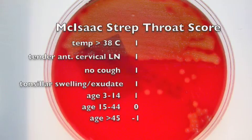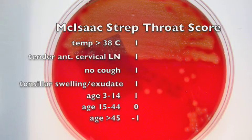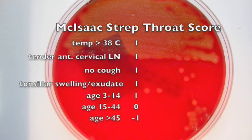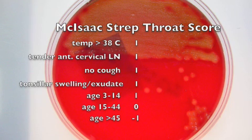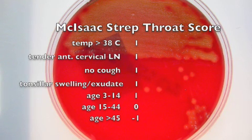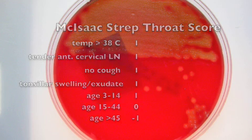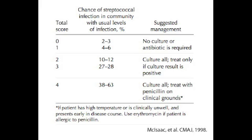Distinguishing bacterial from viral disease, clinically and by microbiological testing, is very important. The MacIsaac score assigns points for signs and symptoms. For instance, a child who has a fever, tender cervical lymph nodes, and no cough would have a score of 4. Patients with scores of 2 or more should probably be tested. Patients with a score of less than 2 should receive reassurance and treatment only of their symptoms.